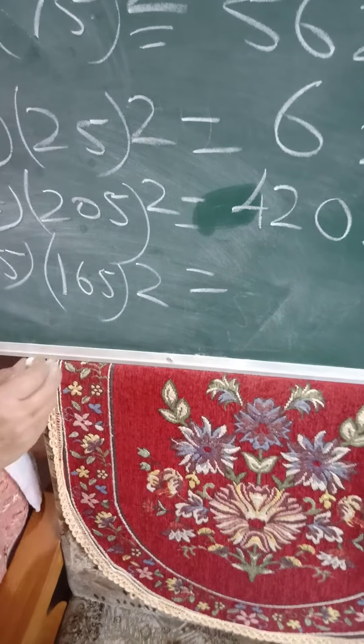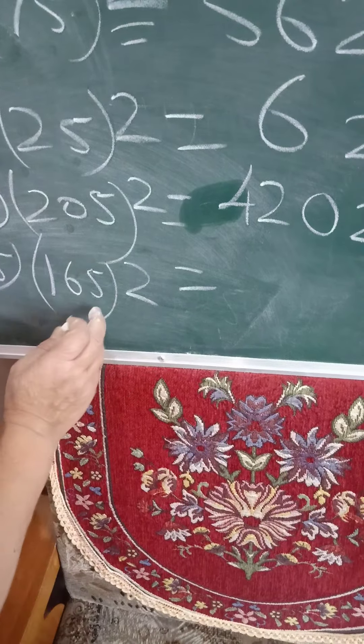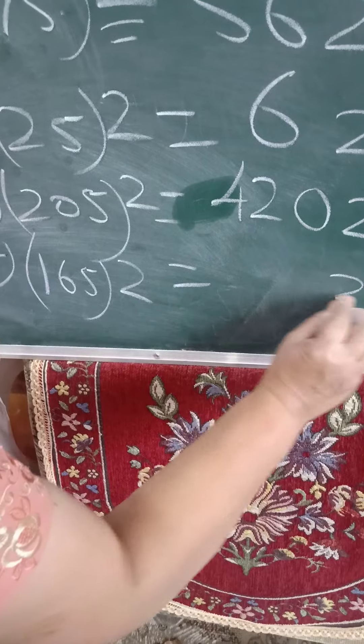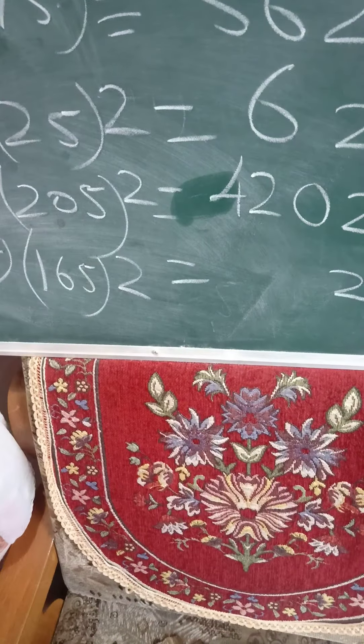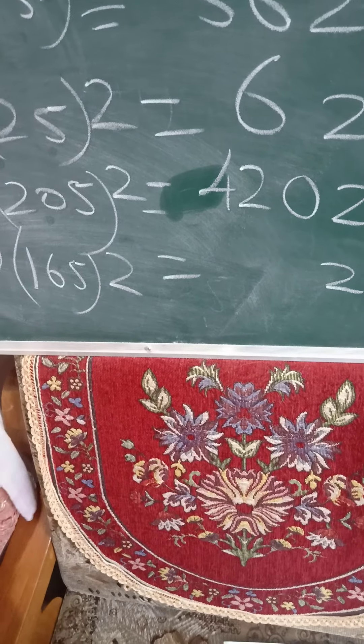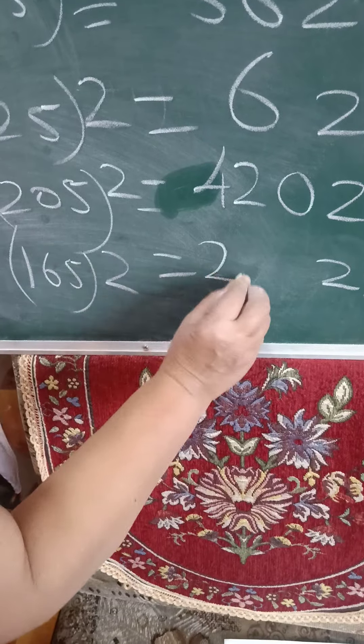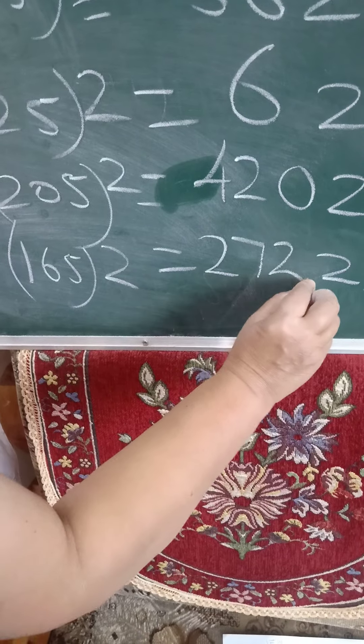Again 165 square. 165 square means 5 square 25. And 16 multiplied by 17. 16 multiplied by 17 is 272.